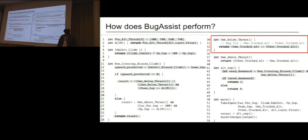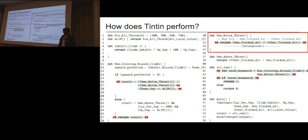Let's see how our tool Tintin performs. BugAssist reported 11 locations. We report five, and these five do contain the actual bug location.